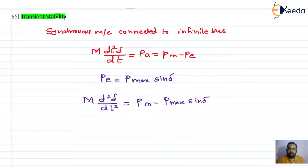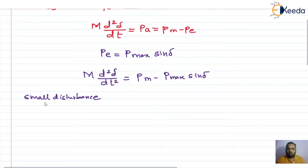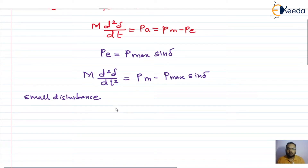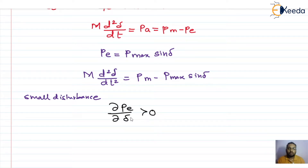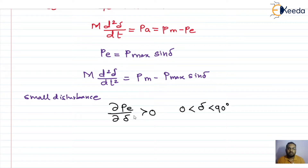When the system is subjected to small disturbances, that is steady state stability studies, we obtained a criteria to check whether the system is stable or not. That criteria is: the differentiation of electrical power with respect to the rotor angle should be positive, and the rotor angle should be greater than zero and less than 90 degrees for the system to have steady state stability.